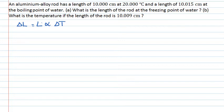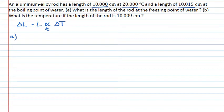Let's have a look at part A. We want to find out what is the length of the rod at the freezing point of water. In order to know that, we really want to work out what is the coefficient of linear expansion alpha for this aluminium alloy. We know that the length changes from 10 centimetres to 10.015 centimetres for a temperature change of 80 degrees, between 20 and 100 degrees Celsius.